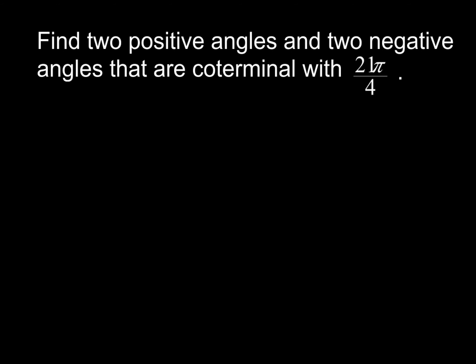A problem that you'll see very often in your trig book. It'll say, find two positive angles and two negative angles that are coterminal with 21π over 4. All right, no big deal. Since we've got 4 on the bottom, 2π is going to be the same thing as 8π over 4. So we're going to have to add and subtract 8π over 4.